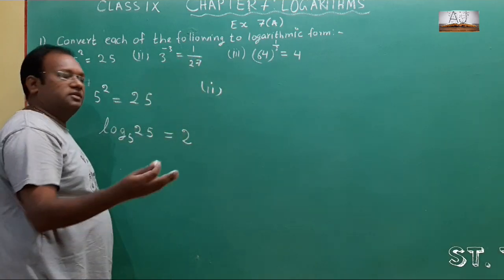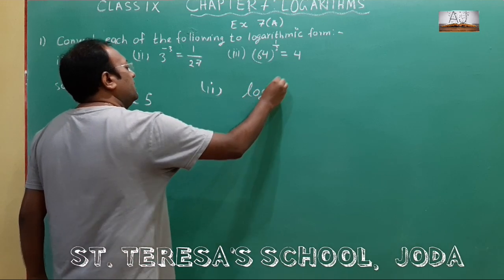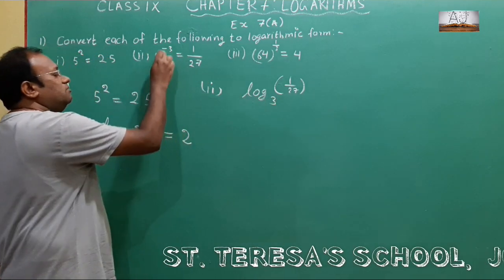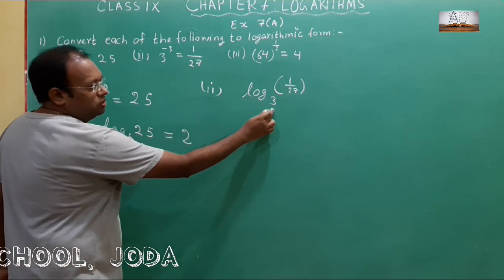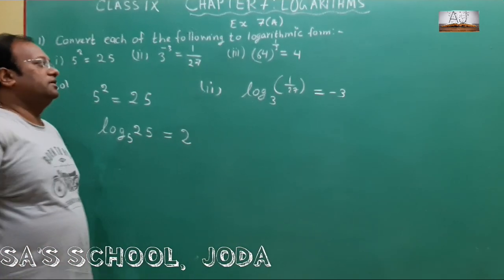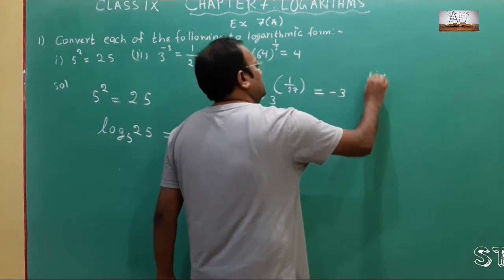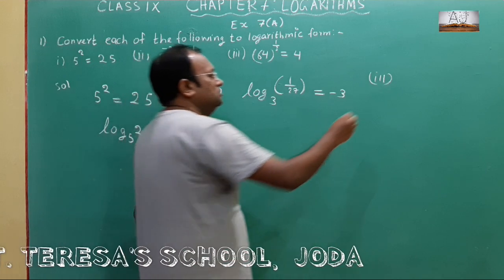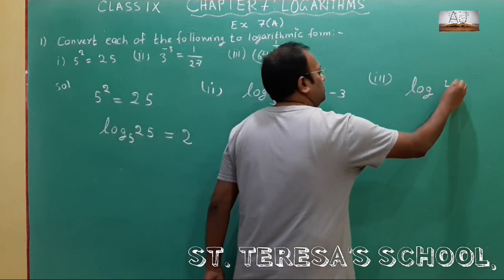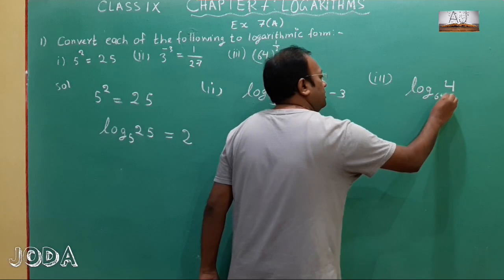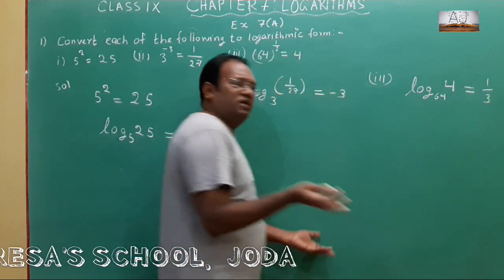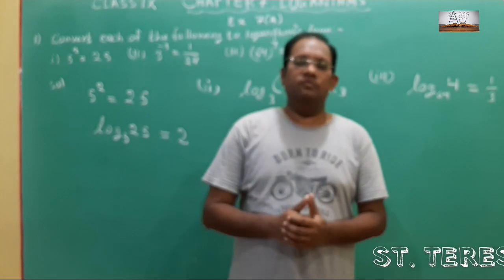The second one: 3 to the power minus 3 is equal to 1 by 27. The same thing — log of 1 by 27 with base 3 equals minus 3. Please write carefully: the base should be in the base position. The third one: 64 to the power 1 by 3 is equal to 4. So it becomes log 4 with base 64 equals 1 by 3. This is how we convert exponential form into logarithmic form.